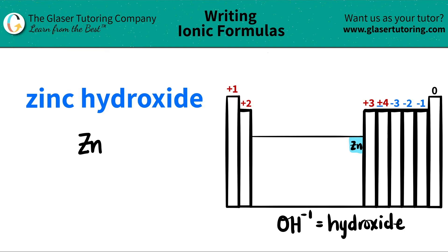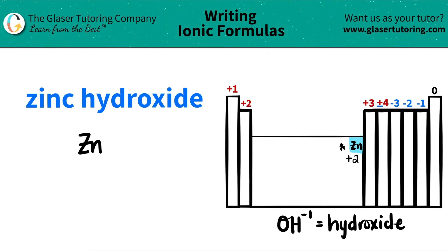Now, what charge am I going to use for zinc? It's in this box, which means that it's a transition metal. Usually transition metals have more than one charge, but I don't see a Roman numeral here. I would star this one because this is an exception — even though zinc is a transition metal, it only has one charge, and that charge is always going to be a plus two. So zinc is always going to be a plus two charge.